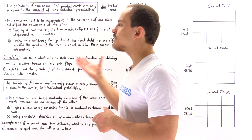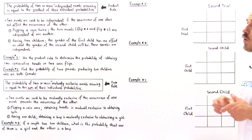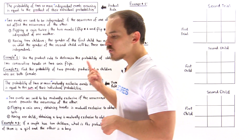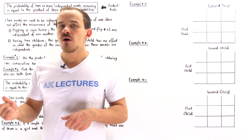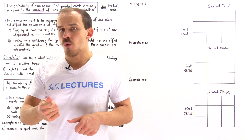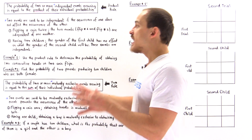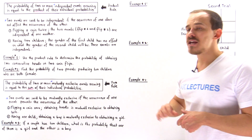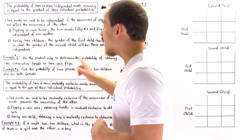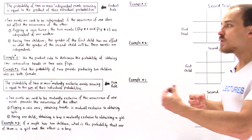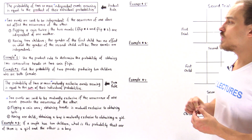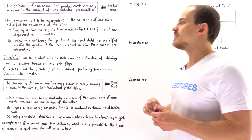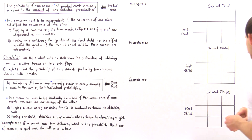Another example is having children, which is more relevant when talking about genetics. Having child number one is event number one, and having child number two is event number two. The outcome of event number one could be either a girl or a boy, and the outcome of event number two could also be a girl or a boy. Because event number one is independent of event number two, the gender of the first child has no effect or influence on the gender of the second child. So we can get a boy and a girl, boy and boy, girl and girl — four different possibilities.